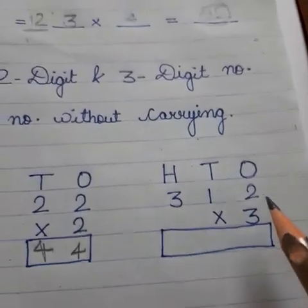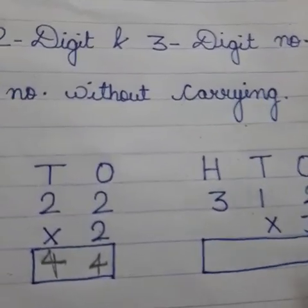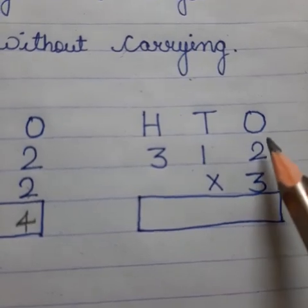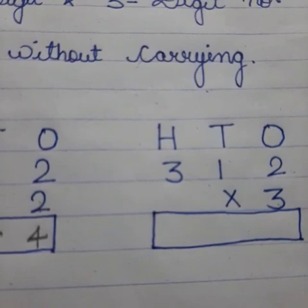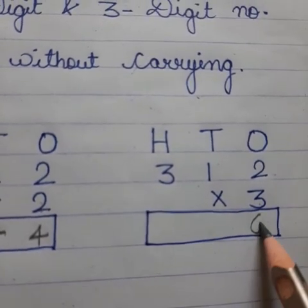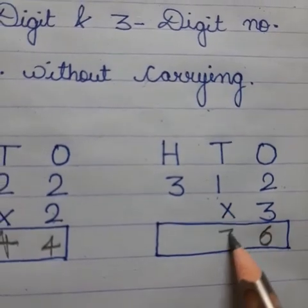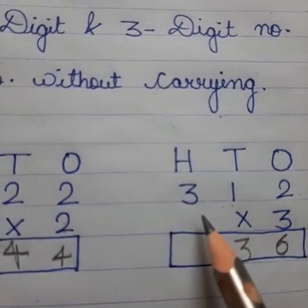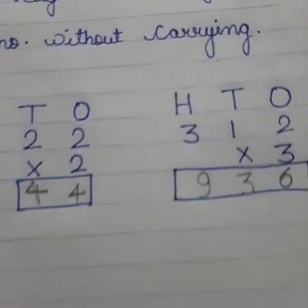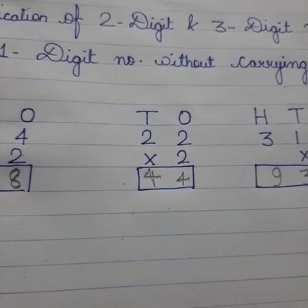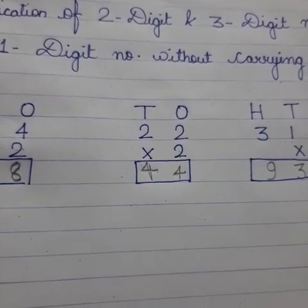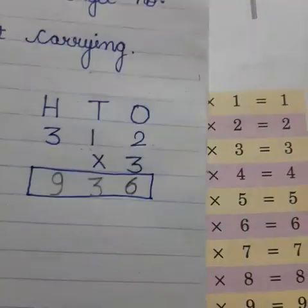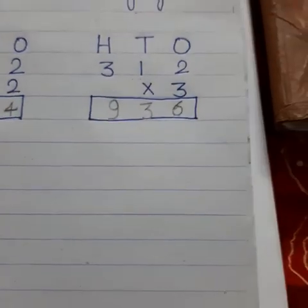Here is a three-digit number, so we again start from the ones place. We read the table of 3: how many times? Two times. 3 one is 3, 3 twos are 6. Then 3 one is 3, and 3 threes are 9. This is the multiplication of two-digit and three-digit numbers by a one-digit number.